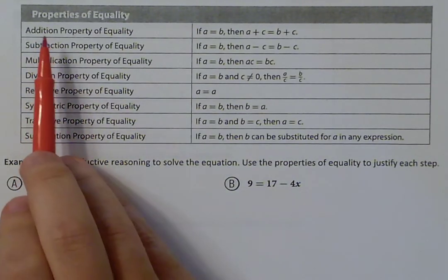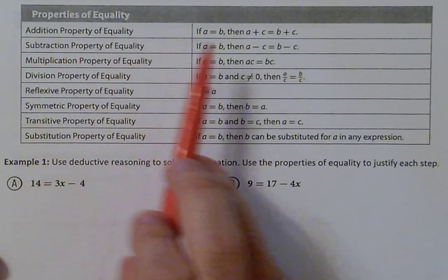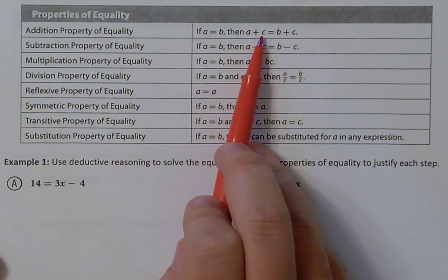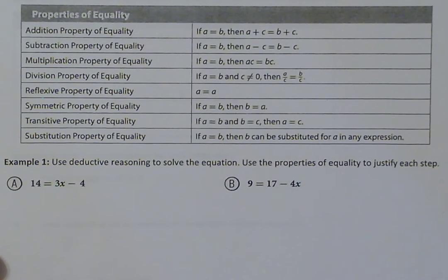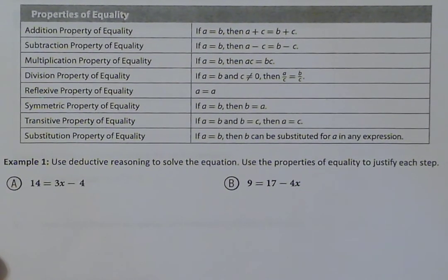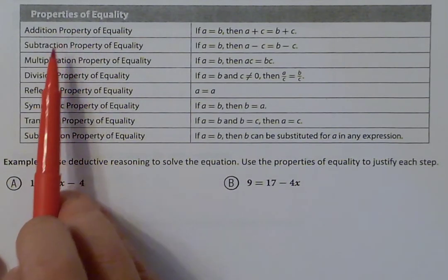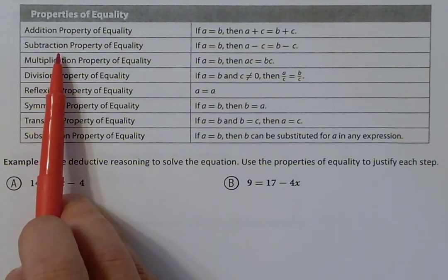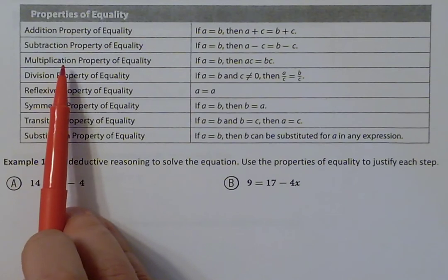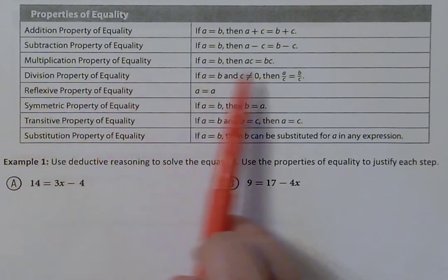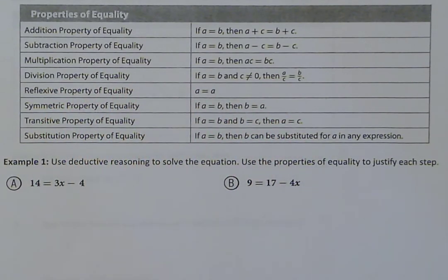The addition property of equality states that if a equals b, then a plus c equals b plus c — I can add the same thing to both sides. Similarly, the subtraction property lets me subtract the same number from both sides, the multiplication property lets me multiply both sides by the same number, and the division property lets me divide both sides by the same number.